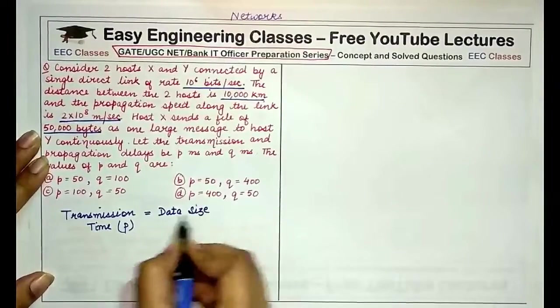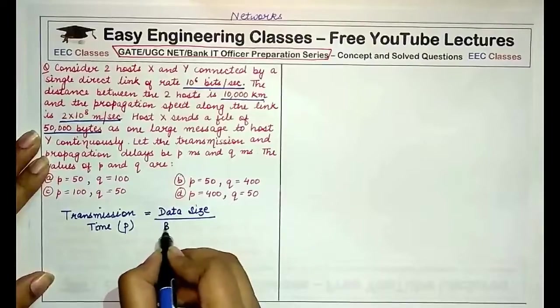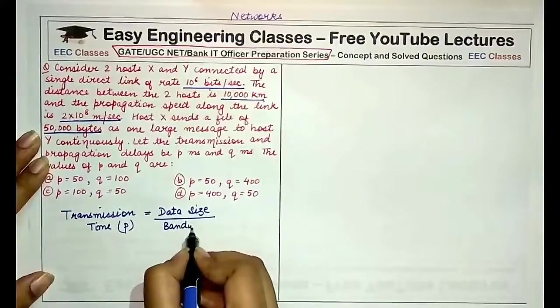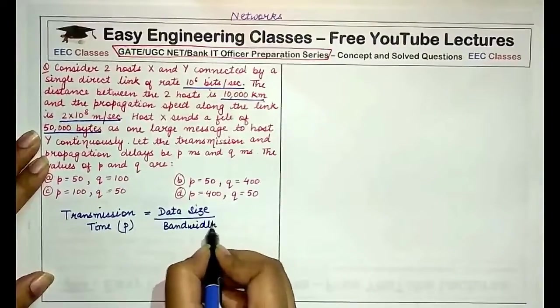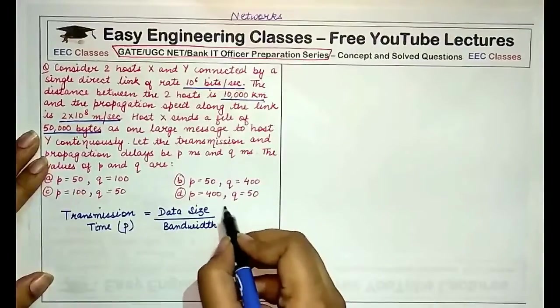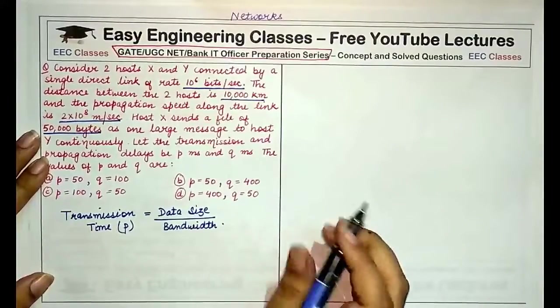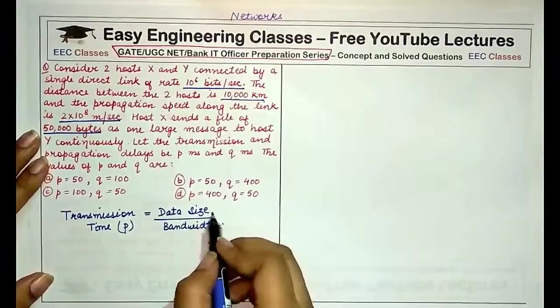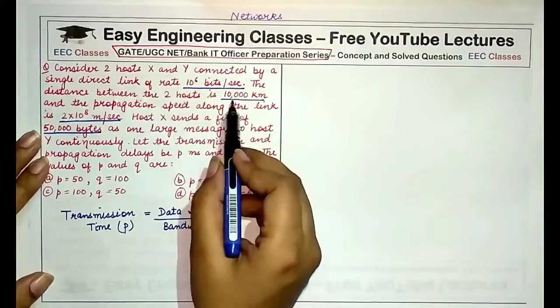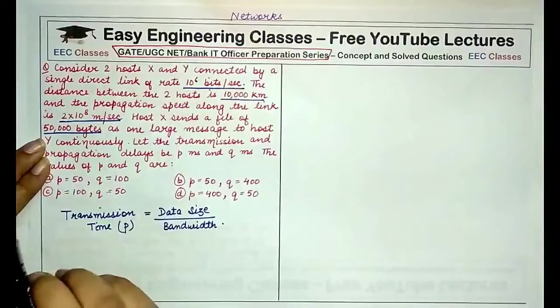That means the size of the data that has to be transmitted divided by the bandwidth. Bandwidth we can also understand as the amount of data that can be transmitted by the channel. This is the amount of data that has to be transmitted, and this is the data that can be transmitted by a channel in a particular duration. So data size that has to be transmitted is given to you as 50,000 bytes.